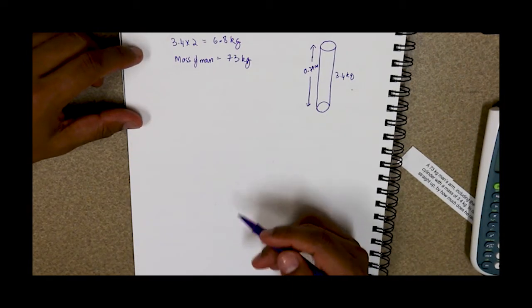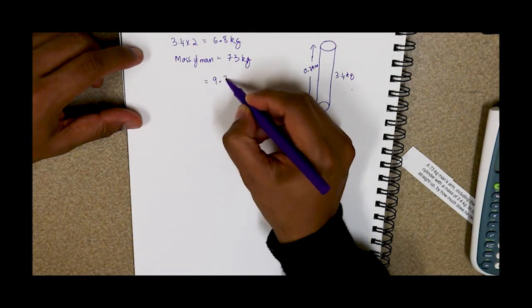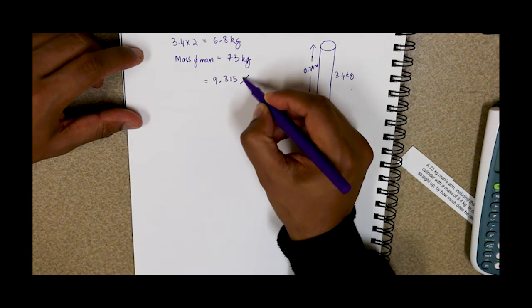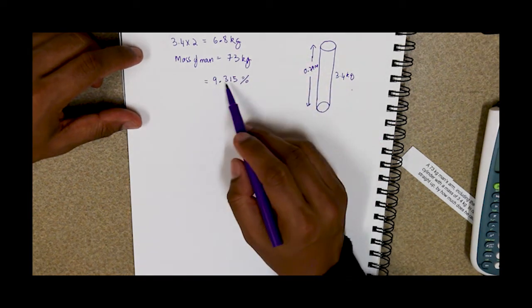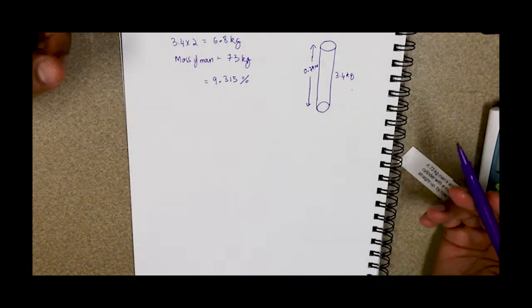That fraction gives us 9.315%. So 9.315% of his body mass is in his arms.